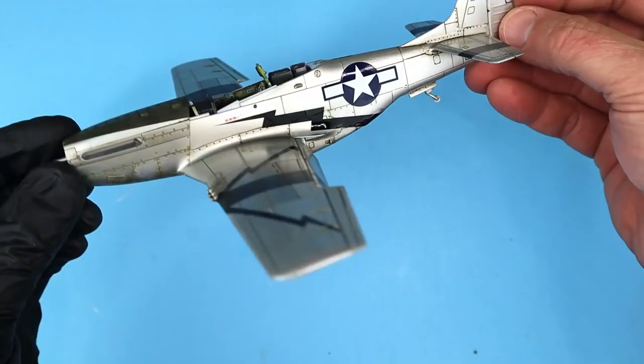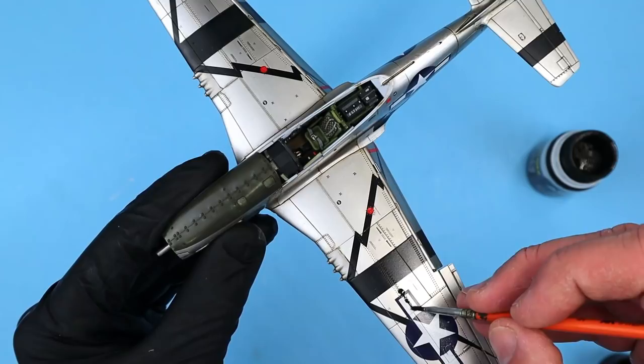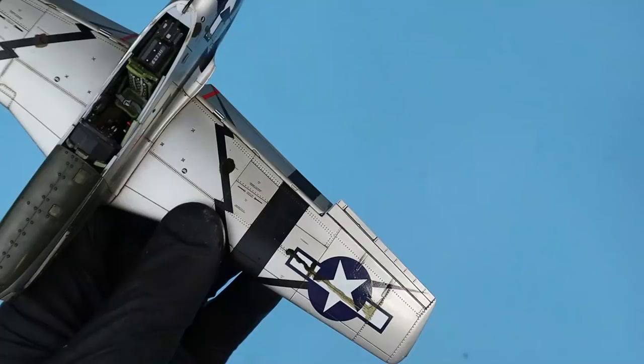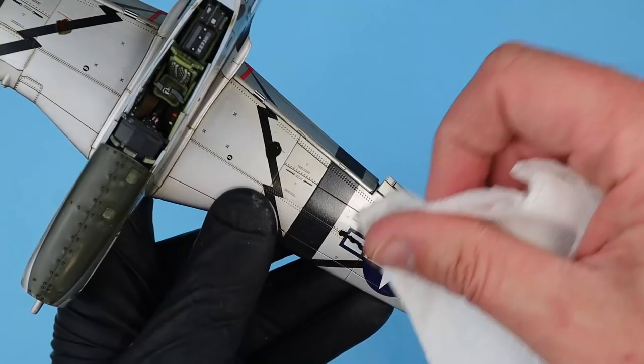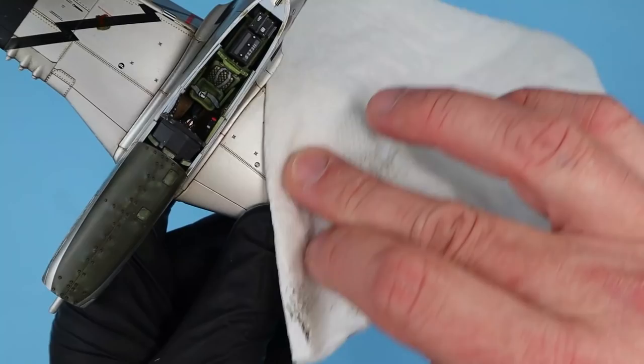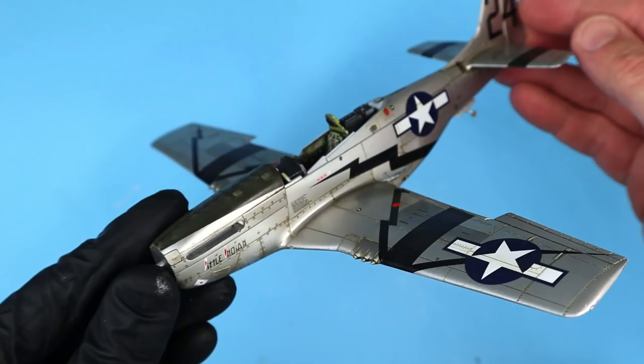With the decals down and set I came back in and applied more of that AK panel liner to add a little weathering to each of the individual decals. Here's how things looked after all the decals and panel line washes had been applied.